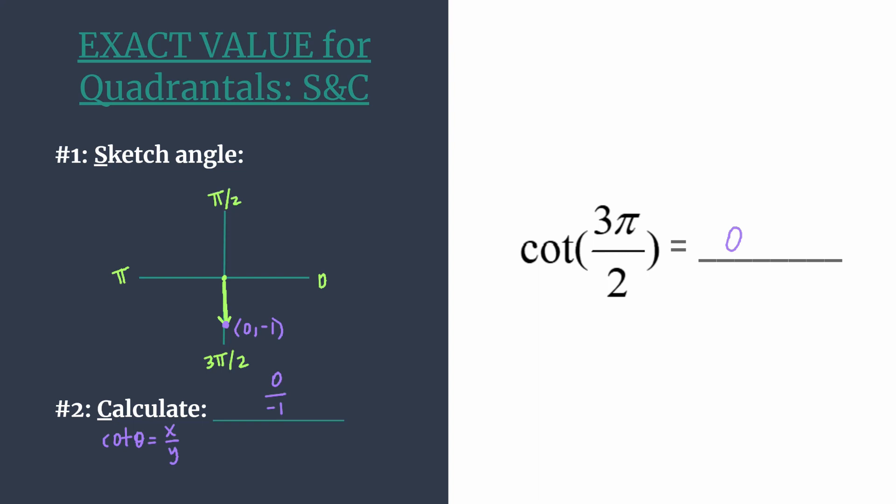One neat observation to make here is that if you were to graph y = cotangent x, you would see an x-intercept, or what's called a zero, at 3π/2. And so when we say the exact value of cotangent at 3π/2 is 0, that's the graphical connection.